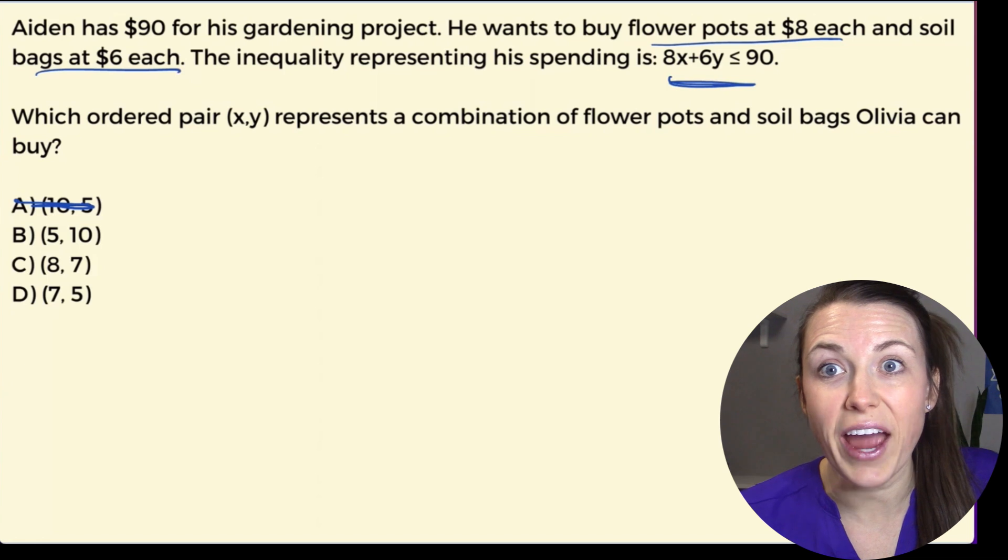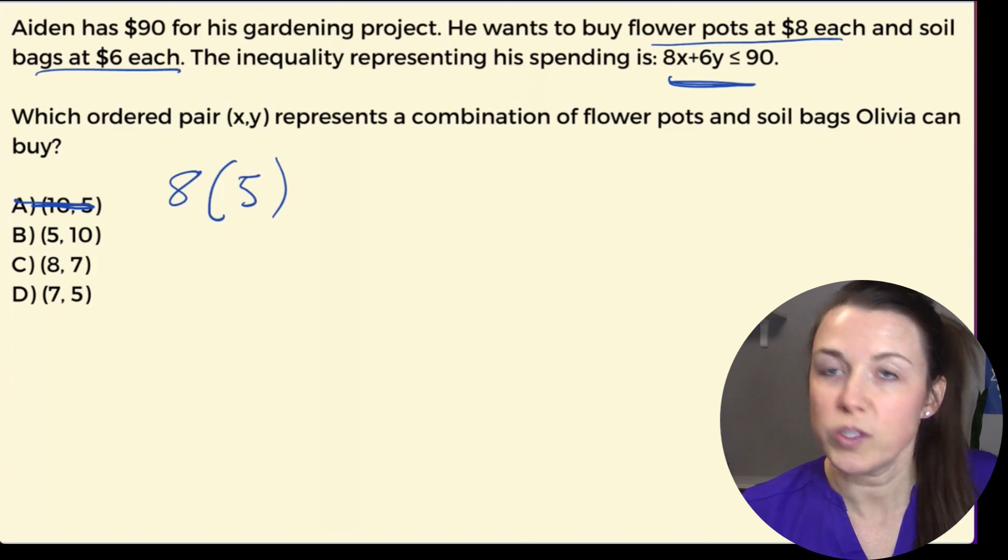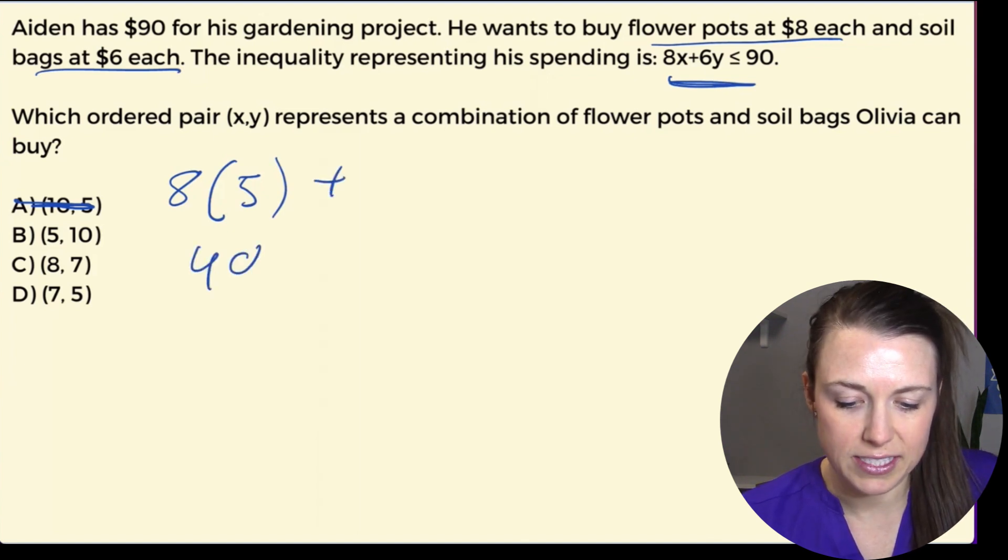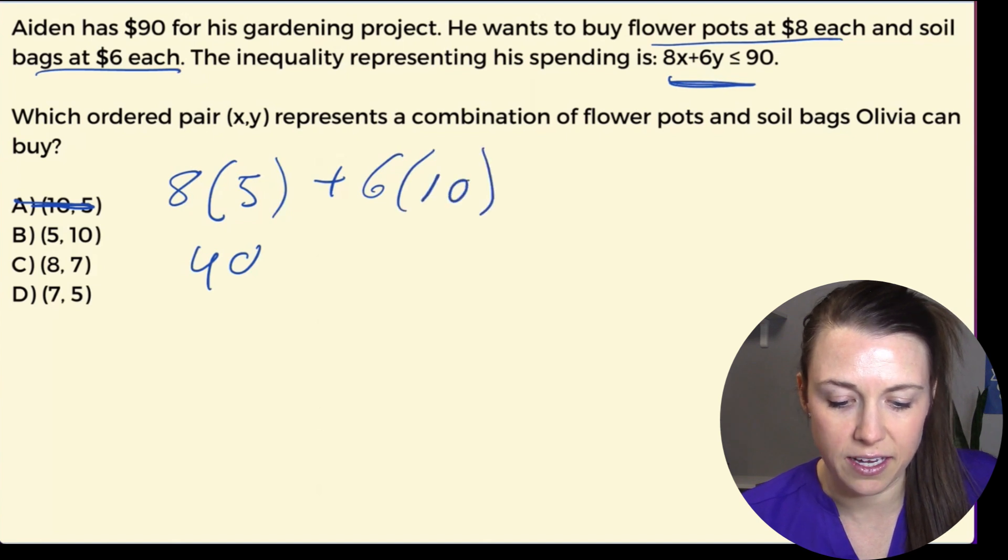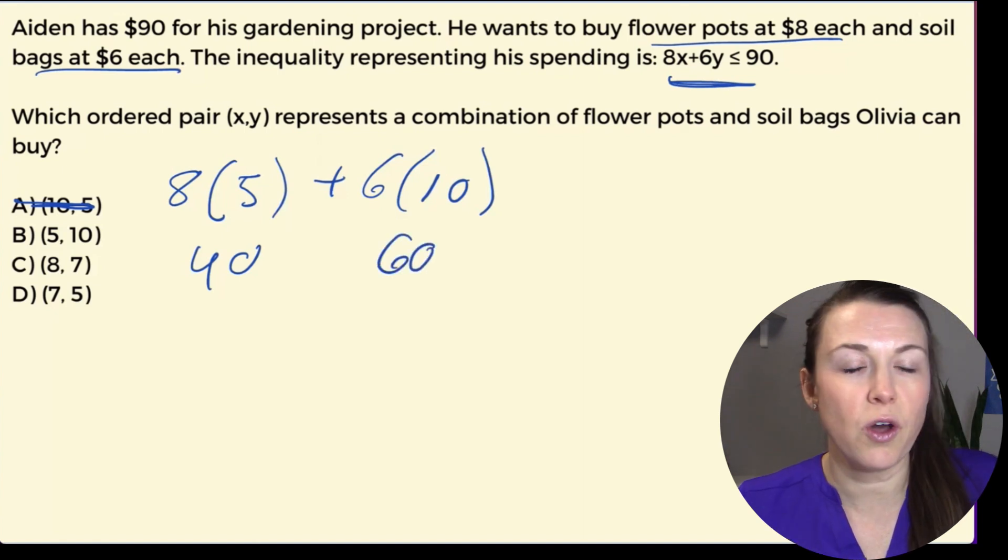So let's try B. I have 8 times 5, which is 40. We're looking a little better now. Plus 6 times 10 is 60. Uh-oh, friends. 40 plus 60, that's 100. That's over. They can't use that one.